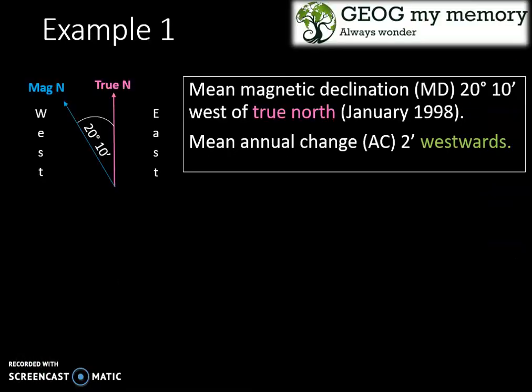Let's look at an example. The mean magnetic declination is 20 degrees 10 minutes west of true north in January 1998. The mean annual change is 2 minutes westwards.